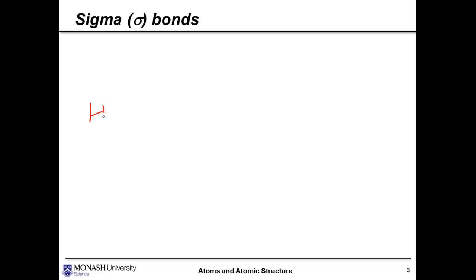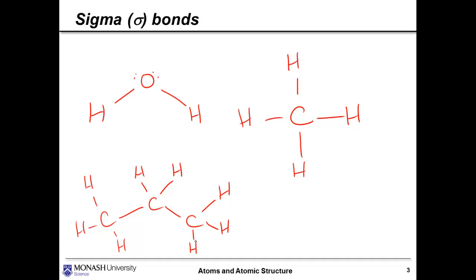If we look at a few basic examples, and when I say basic, we'll make it basic. Here's the Lewis structure for water, the Lewis structure for methane, and I might even draw a small hydrocarbon. Every single bond in these molecules here are sigma bonds. So sigma bonds are not just for diatomic molecules, they're for more complex molecules as well.